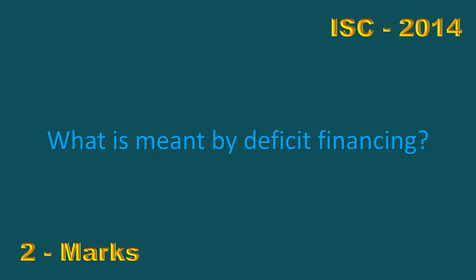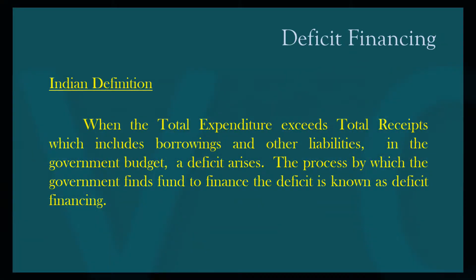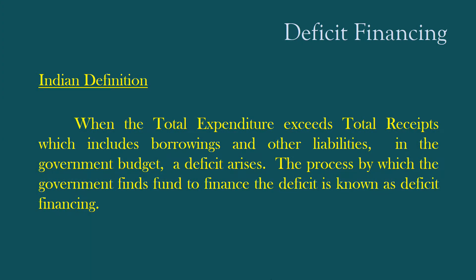To be on the safe side, give both definitions. The Indian Definition: When the total expenditure exceeds total receipts, which includes borrowings and other liabilities in the government budget, a deficit arises. The process by which the government finds funds to finance the deficit is known as Deficit Financing.